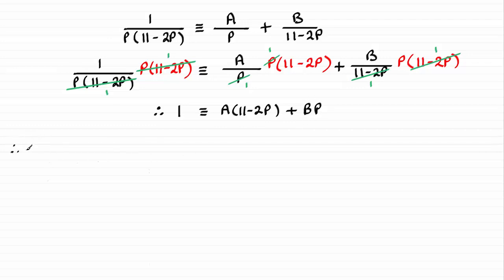It avoids simultaneous equations. So what I'm going to do is let P equal zero. If I do that, we therefore have that 1 is equal to 11 minus zero there, so just 11A. It's going to be 1 is equal to 11A.